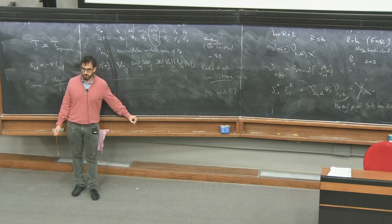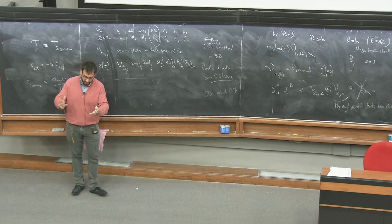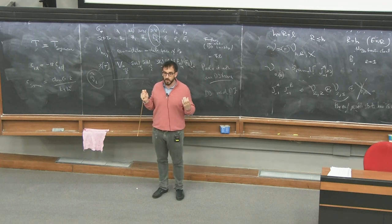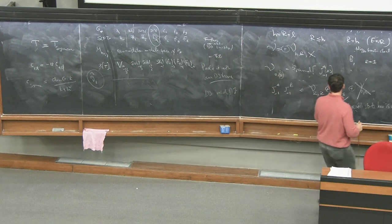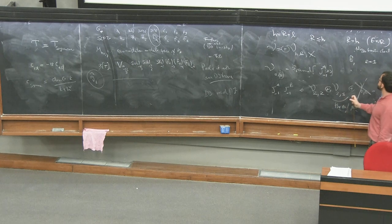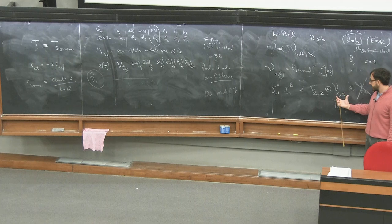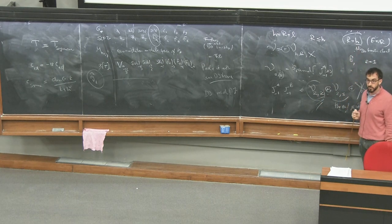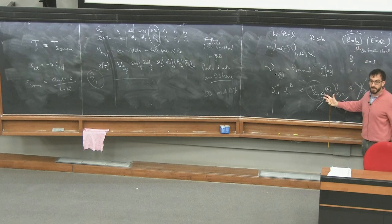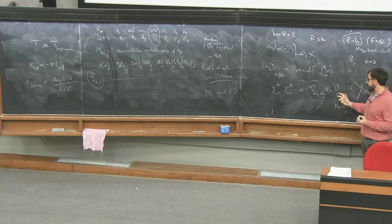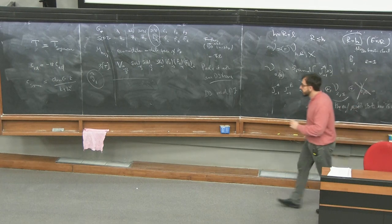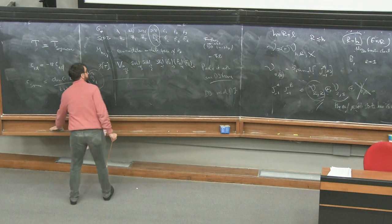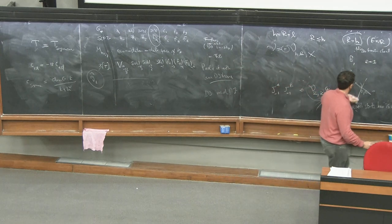A simple first step: if I hand to you the VOA abstractly defined in terms of generators and their singular OPE coefficients, can you reconstruct the four-dimensional Higgs branch? This is a non-trivial question because the Higgs branch is there but somewhat hidden due to this funny business of the R-grading. The Higgs operators are those with h = R, and extracting precisely that leading term is non-trivial in general if you don't know the quantum number assignment. The Sugawara construction is the simplest of infinitely many such ambiguities that can occur.